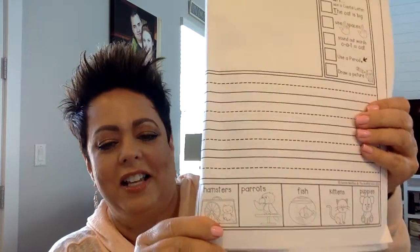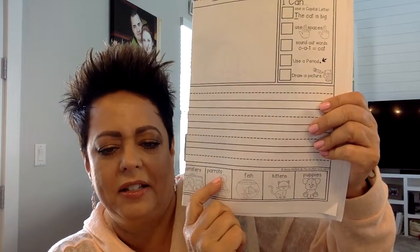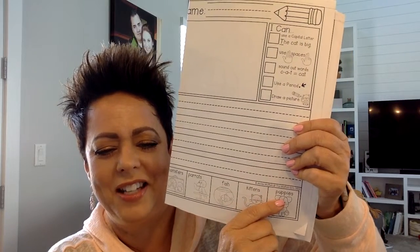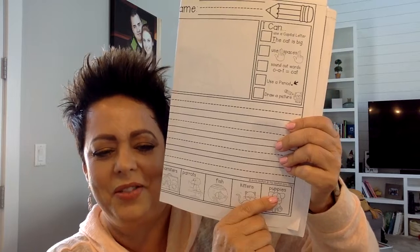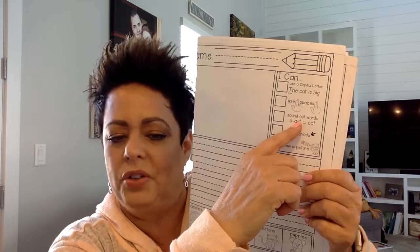For your last sentences, you get to write about some animals today. The words are: hamsters, parrots, fish, kittens, and puppies. You can use as many of these words as you would like. I want you to write two sentences today using those words. Remember: use a capital letter at the beginning, finger spaces, write down the sounds you hear if you don't know how to spell a word, put a period at the end, and draw a picture. That's our last journal page. I'm so proud of you for working so hard on your journal pages — I can tell you're getting ready for first grade. Good job, my friends.